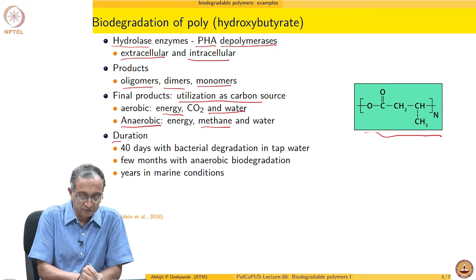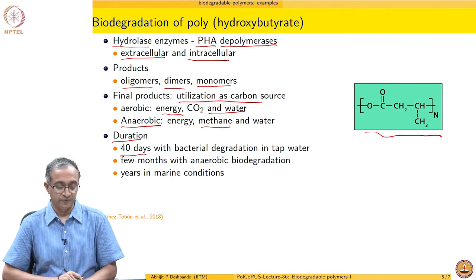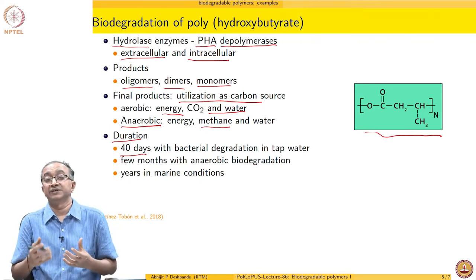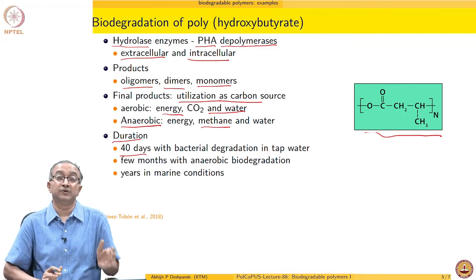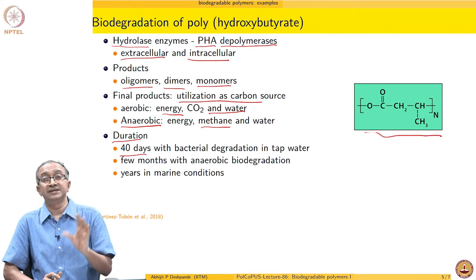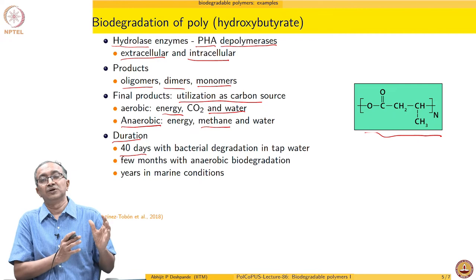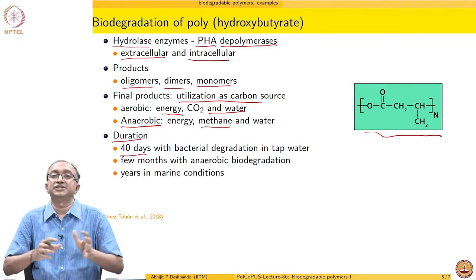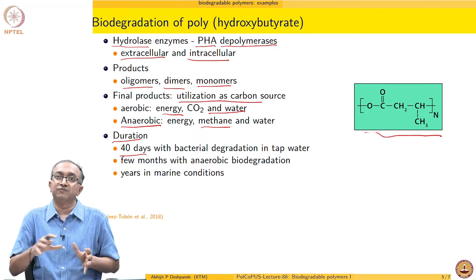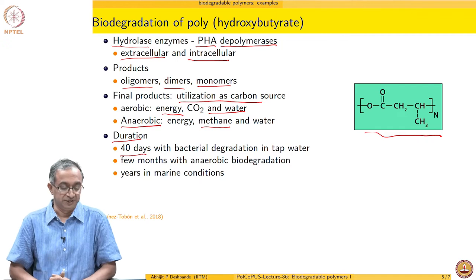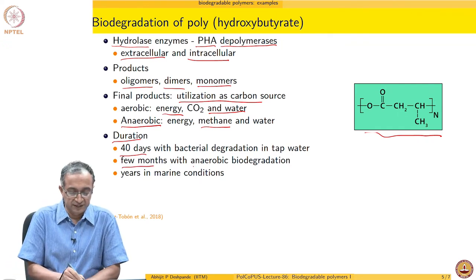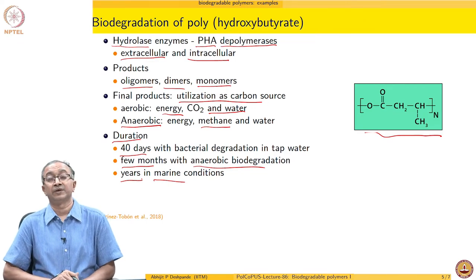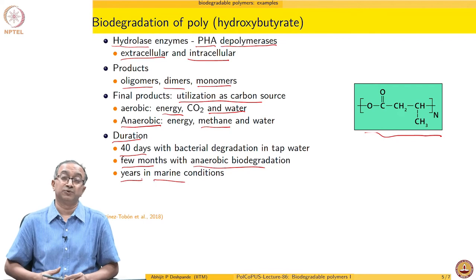The biodegradation duration of PHB varies by environment. Research shows it takes a few days in tap water, a few months in anaerobic conditions, and a few years in marine conditions. Very careful work must be done to confirm that measurements reflect actual biodegradation — examining the macromolecule and its products, tracking gas sources, and analyzing energy and material flow. Nevertheless, even a few years in marine conditions is far better than the fate of many conventional synthetic polymers.